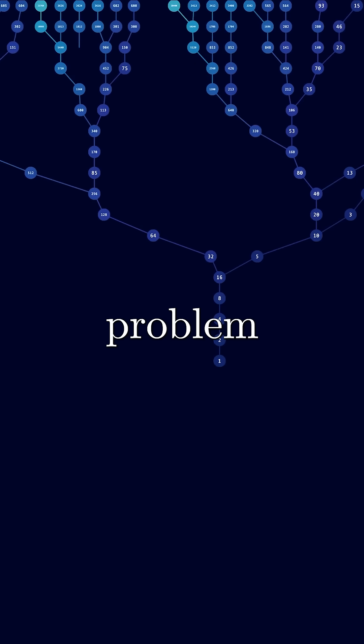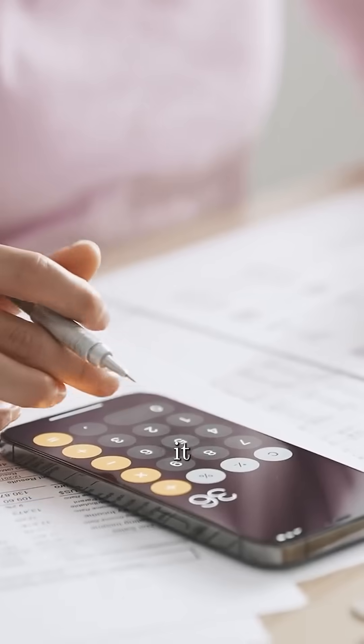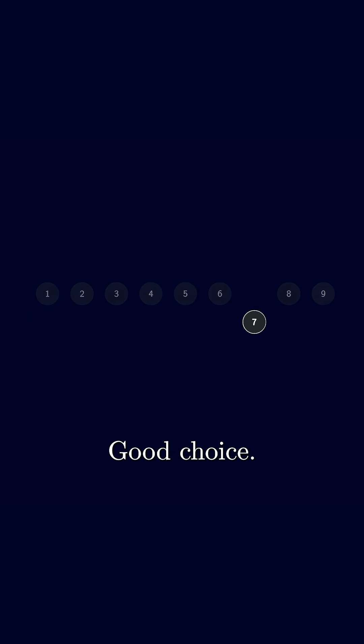This is the most dangerous problem in mathematics. Here's how it works. Pick a number, seven, good choice.